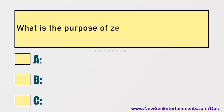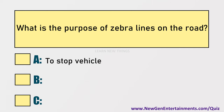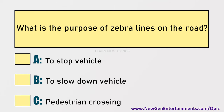What is the purpose of zebra lines on the road? Options are: A) To stop vehicle, B) To slow down vehicle, C) Pedestrian crossing.